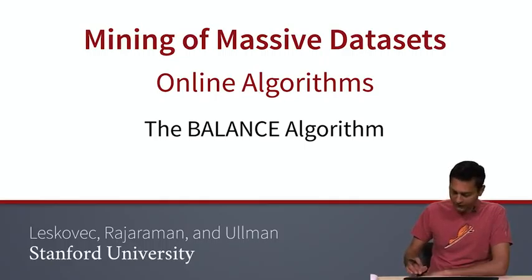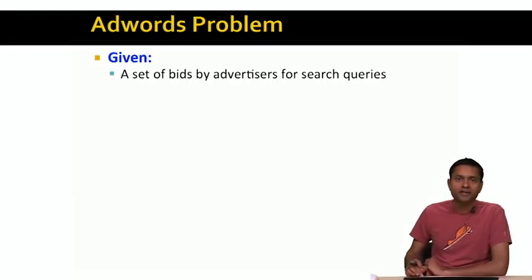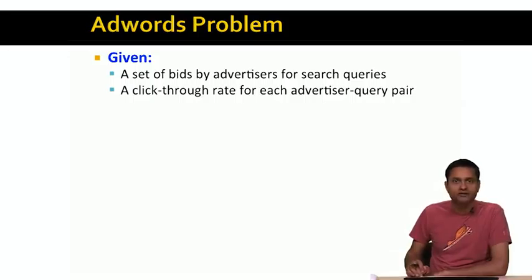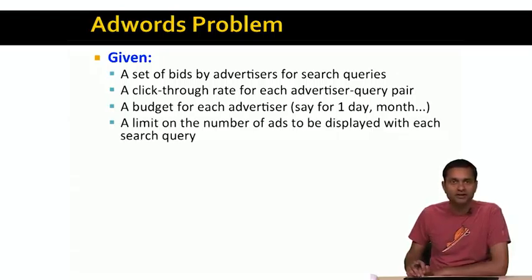To refresh your memory on what the AdWords problem is: we are given a set of bids by advertisers for search queries, a click-through rate for each advertiser-query pair, and a budget for each advertiser. The budget could be for a day, a month, a year, or some period like this. Let's just assume that it's a daily budget. Finally, there is a limit on the number of ads to be displayed with each search query.